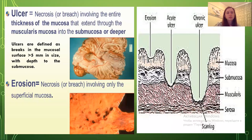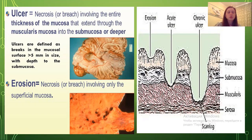Regarding definitions: an ulcer involves necrosis of the entire thickness of the mucosa that extends through the muscularis mucosa into the submucosa or deeper. Ulcers are defined as breaks in the mucosal surface more than 5 mm in size with depth to the submucosa. An erosion involves necrosis of only the superficial mucosa.